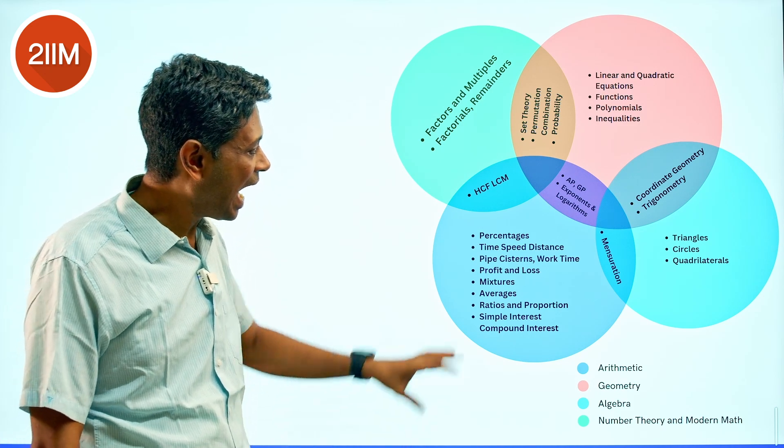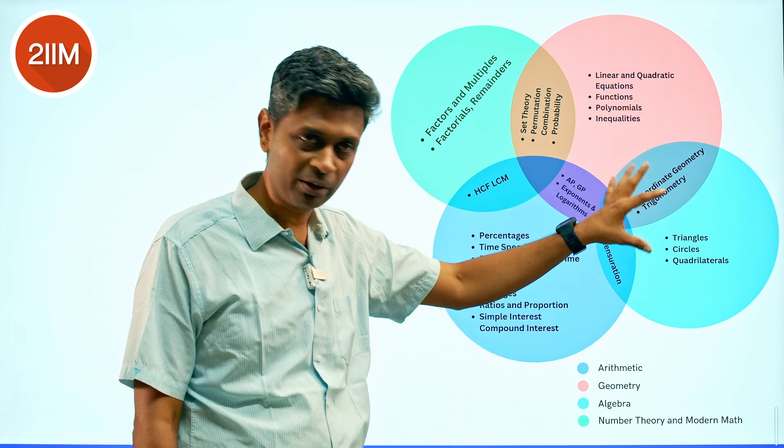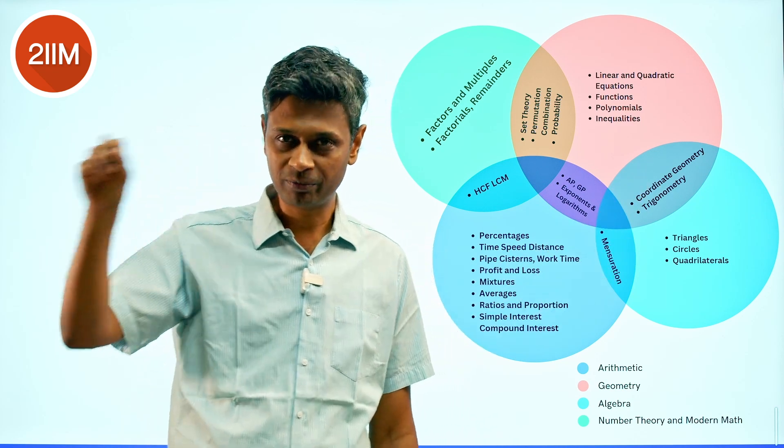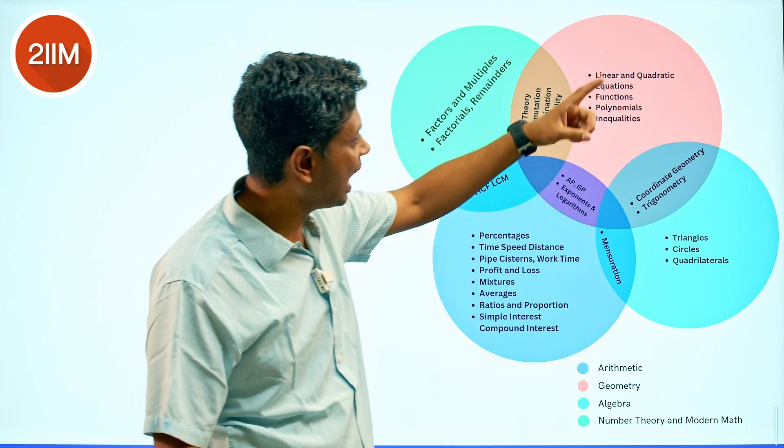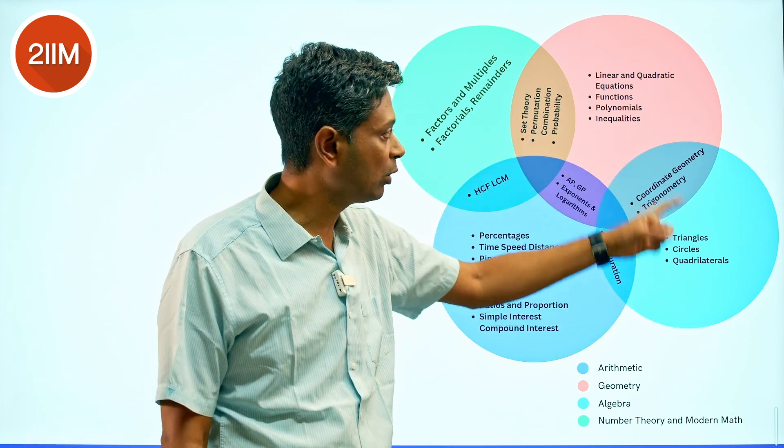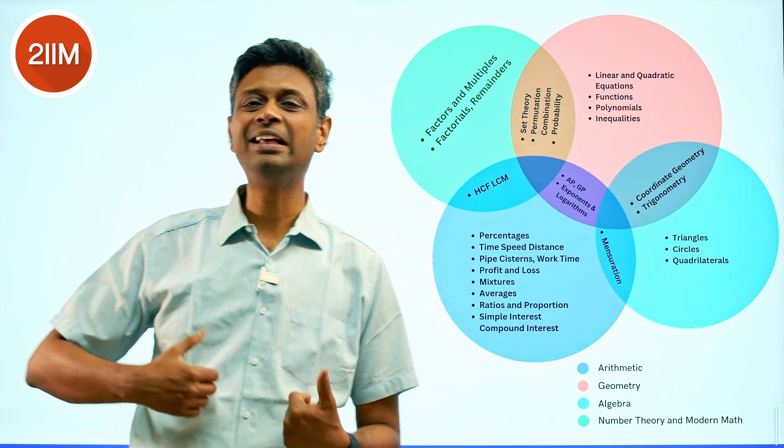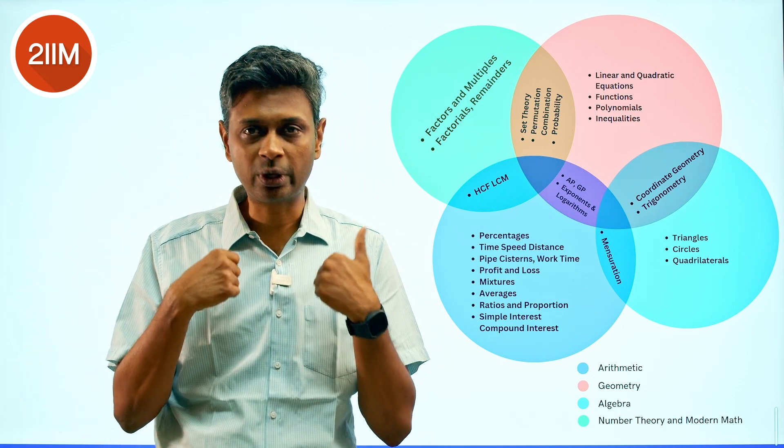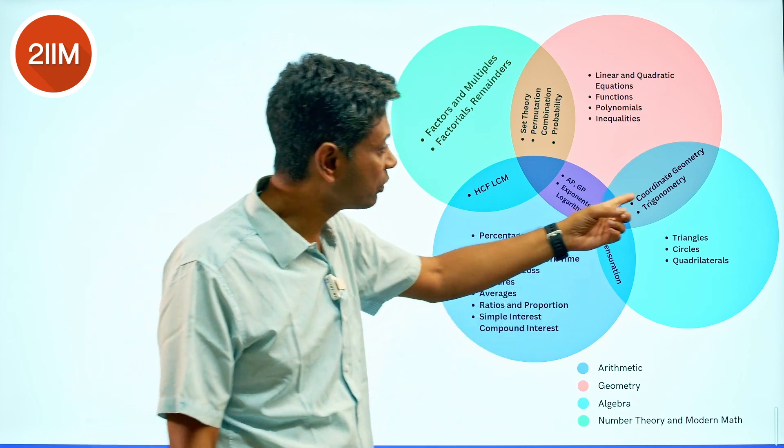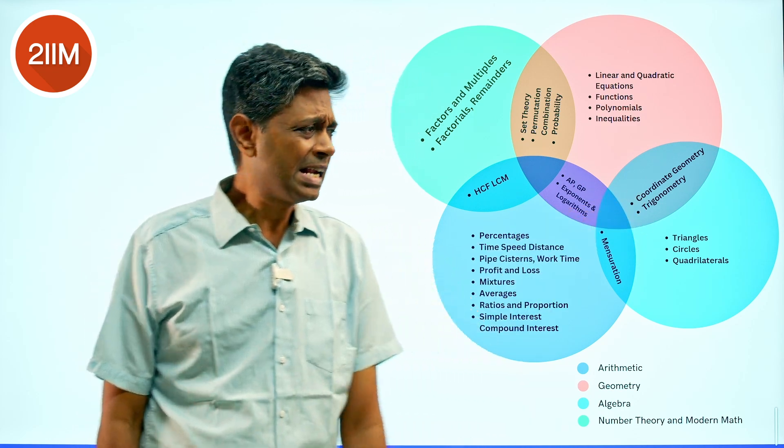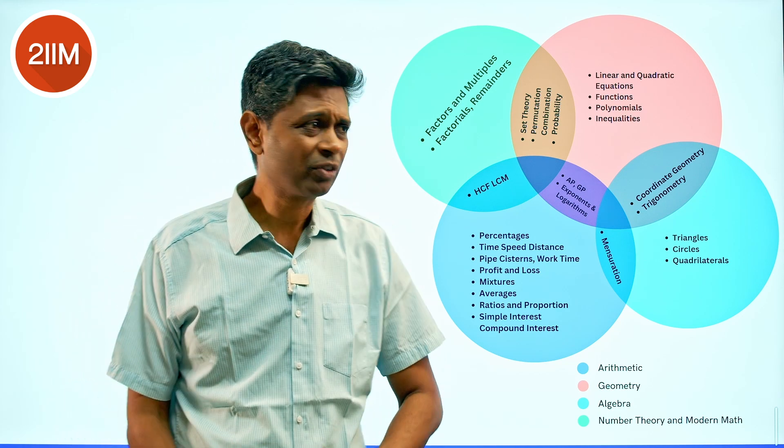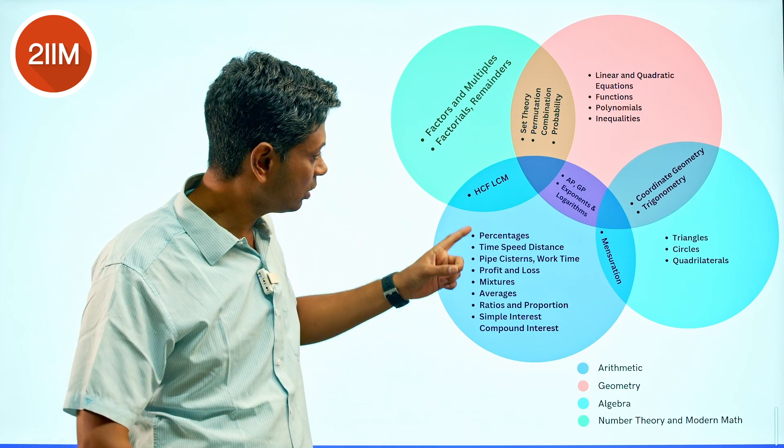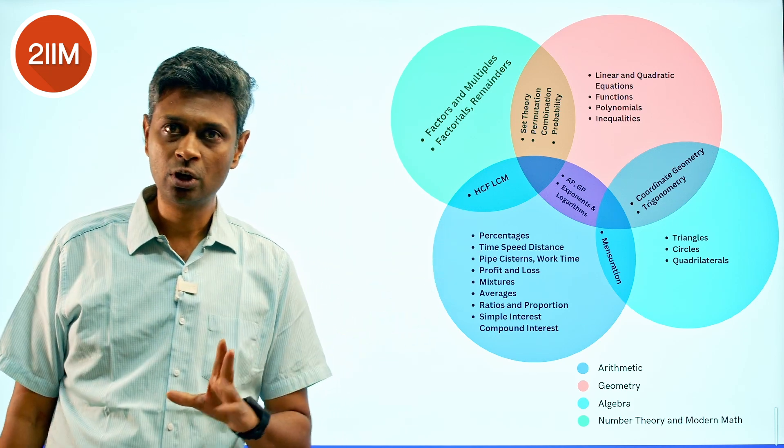So we created like a Venn diagram. The intersection between arithmetic and geometry - maybe mensuration comes here. Simple substitute formula, compute it, get the answer. Intersection between algebra and geometry would be coordinate geometry and trigonometry because we deal with equations and we deal with x² + y² or sin²θ + cos²θ.